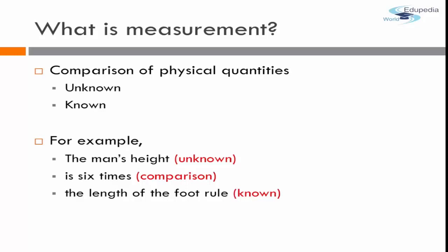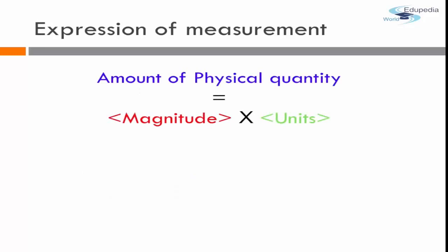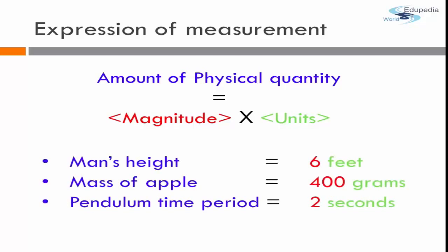The expression of measurement takes the format: amount of physical quantity equals magnitude multiplied by the unit. For example, the man's height is six feet, the mass of an apple is 400 grams, and the pendulum time period is two seconds. Here 'man's height,' 'mass of the apple,' and 'pendulum time period' are the amounts of physical quantity; six, 400, and two are the magnitudes; and feet, grams, and seconds are the units.